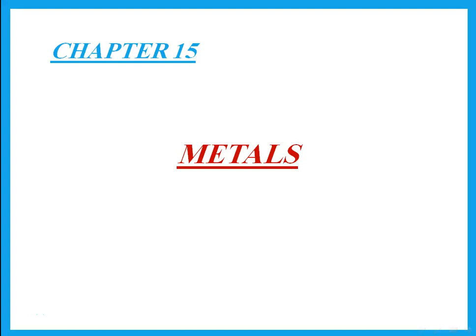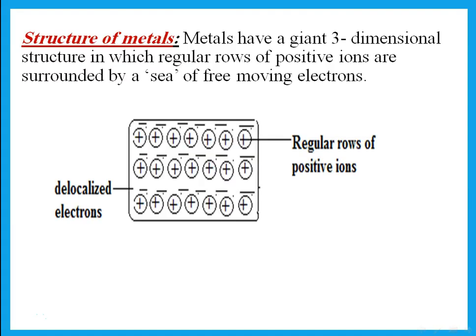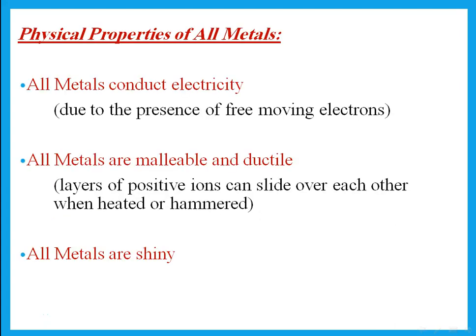This chapter deals with the chemical properties of metals. We already talked about physical properties of metals when discussing giant macromolecular structures in the chapter on chemical bonding. We said metals have a giant three-dimensional structure with regular rows of positive ions surrounded by a sea of free-moving electrons. Metals have one, two, or three electrons in their outer shell — these electrons are floating around each atom, making the atom a positive ion, surrounded by what we call delocalized electrons.